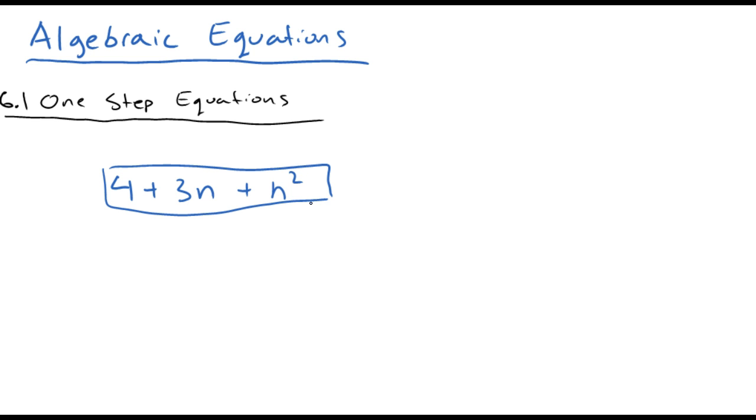Okay, on the other hand, algebraic equations, what the difference is, is that you can actually get an answer. Or you can solve your equation or solve for your symbols. For example, if I had 4 plus 3n plus n squared equals 5,